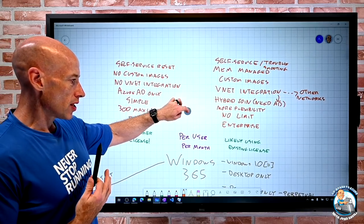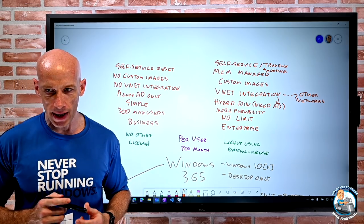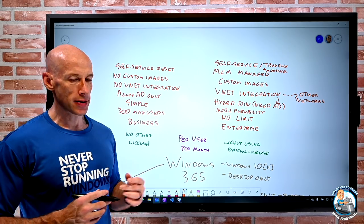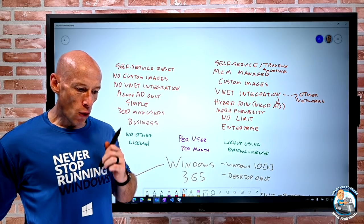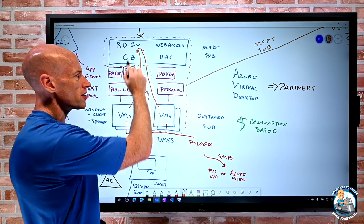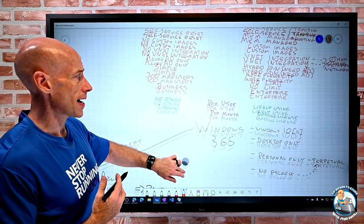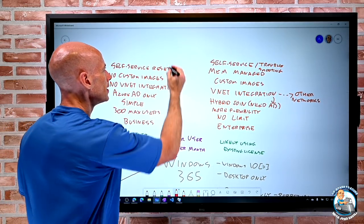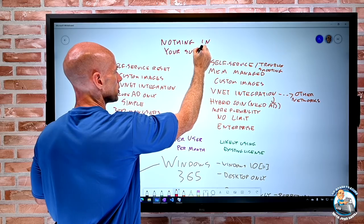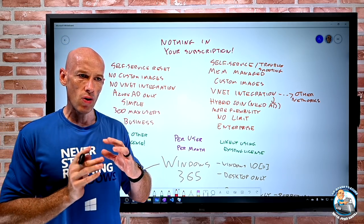If I'm a smaller company and just want to quickly get some desktops spun up for users, Business is very simple - I'll be up and running quickly. If I'm a bigger company wanting more integration, Enterprise is probably the better fit. For both of them, those different components and bits - the ones that never showed in your subscription in Azure Virtual Desktop, and the VMs - we don't get any of that. Nothing shows in your subscription. This is really more like a Microsoft 365 service.